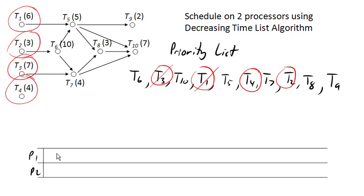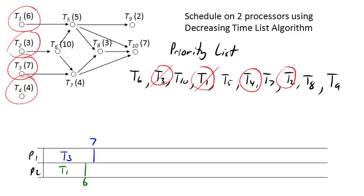Processor one is going to be working on task three. We'll assign task three with a time of seven units. And we'll assign task one to processor two, and task one has a time of six units. So task three and task one have been started.